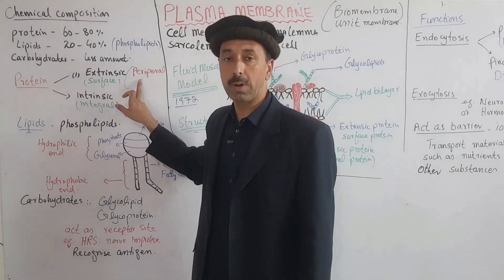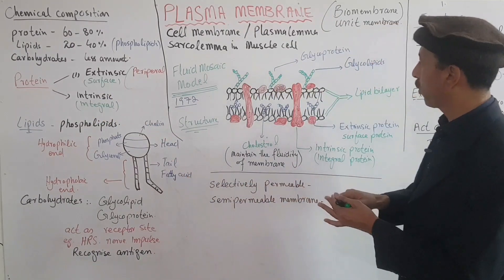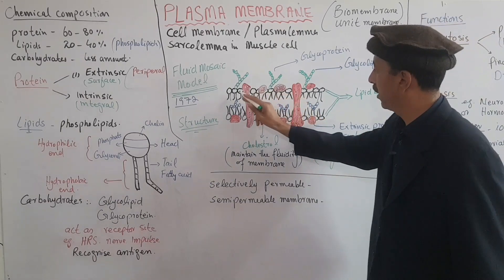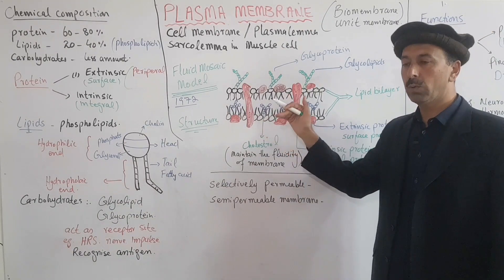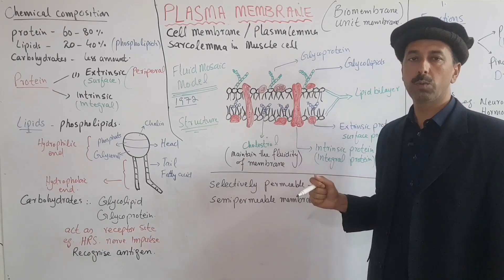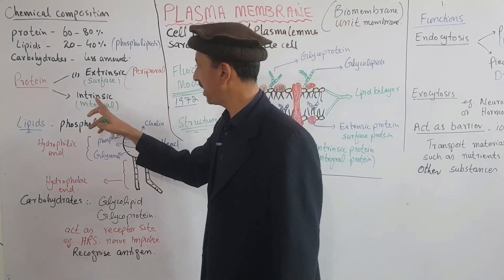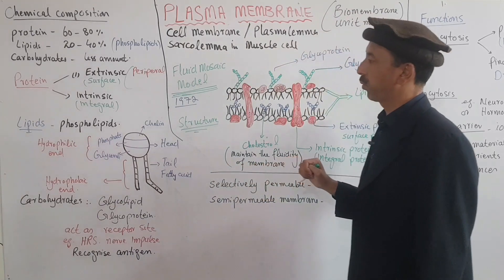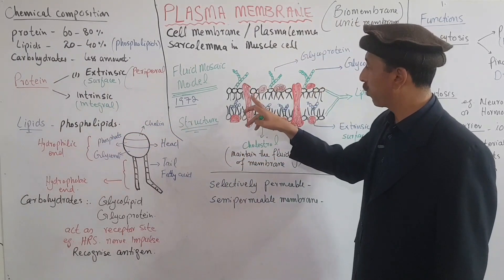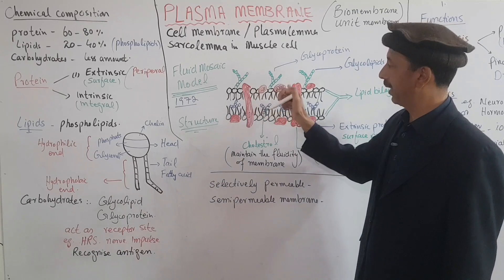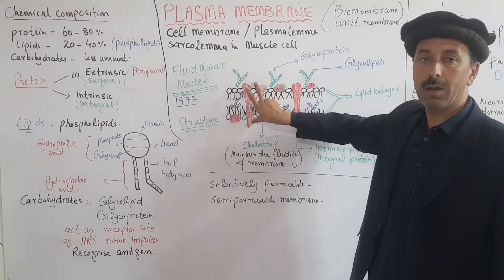Proteins present on the outer surface of the membrane are called extrinsic protein, peripheral protein, or surface protein. They can be found on parts of the membrane surface. The second type is intrinsic protein or integral protein, which are fully embedded in the plasma membrane.